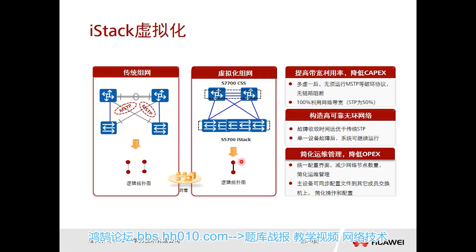At this point, I can turn this topology into a shape where the middle is a link aggregation line and both above and below are switches. What are the benefits of this? Compared to traditional networks where bandwidth would be wasted, now I can achieve 100% bandwidth utilization.